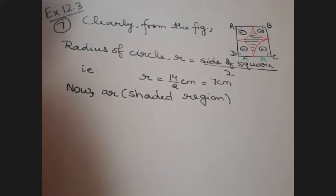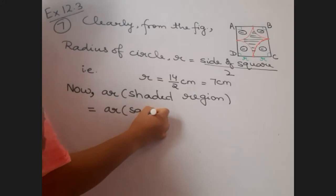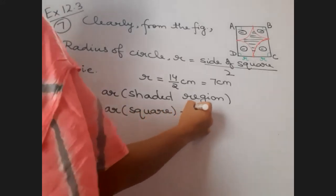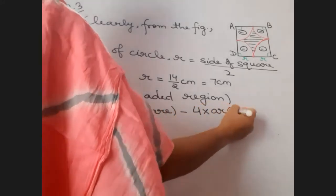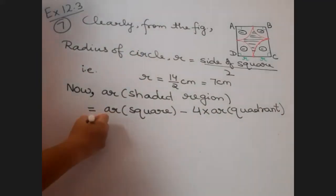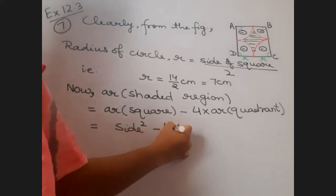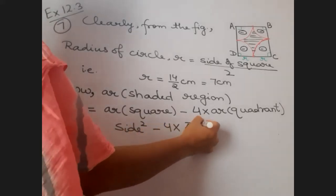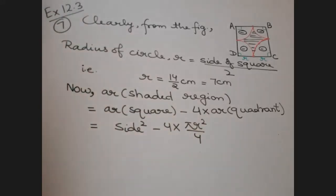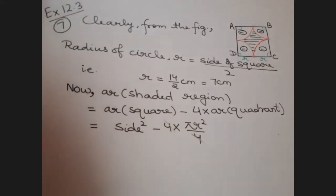Now, area of shaded region is equal to area of square minus four into area of quadrant, which is side square minus four into pi R square upon four is the area of quadrant. And one four is already there, so four and four will get cancelled. Now, your side square is...